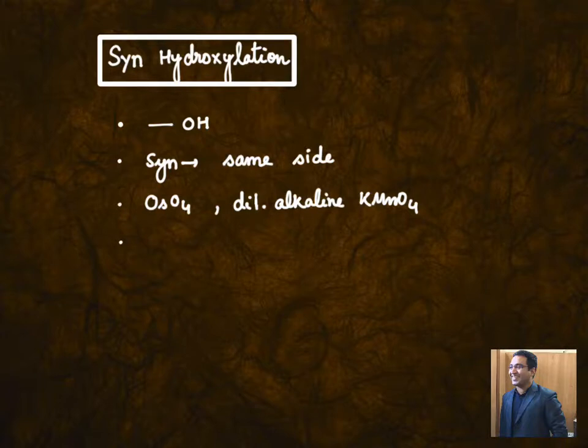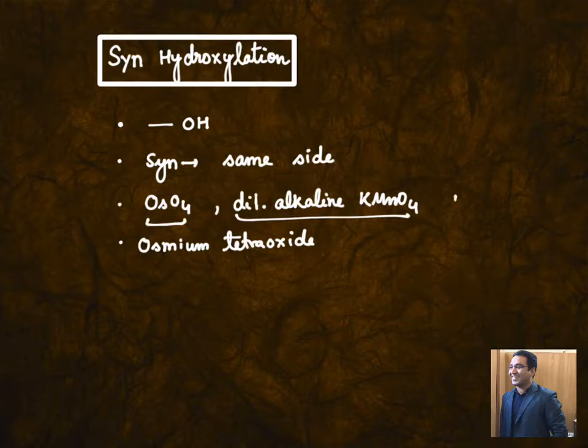Hydroxylation is putting an OH group and syn means from same side. Agents like osmium tetraoxide or we can say dilute alkaline KMnO4, which is also known as Bayer's reagent, can be used for such purpose.